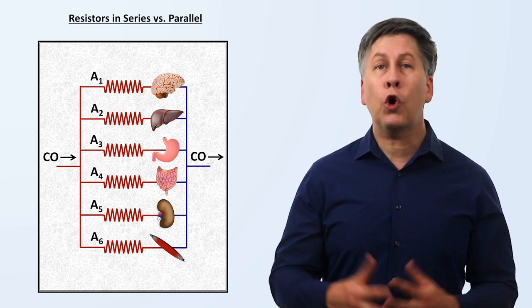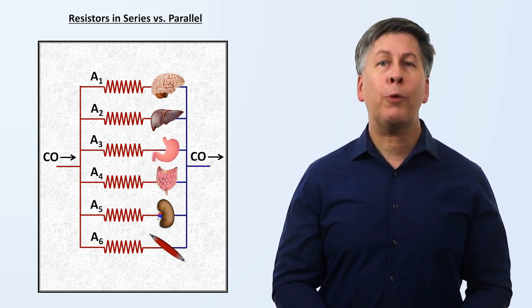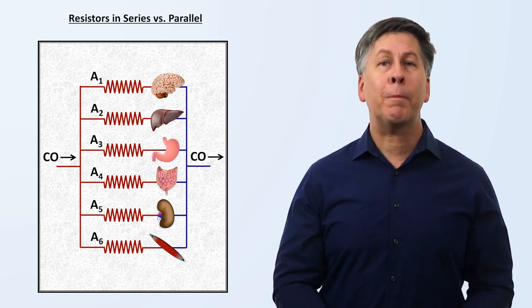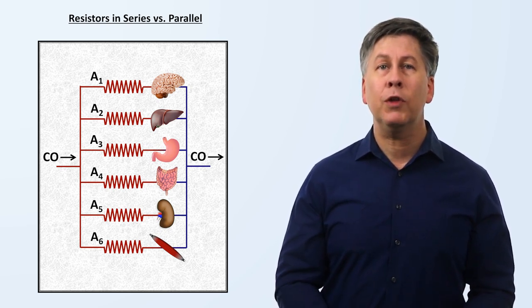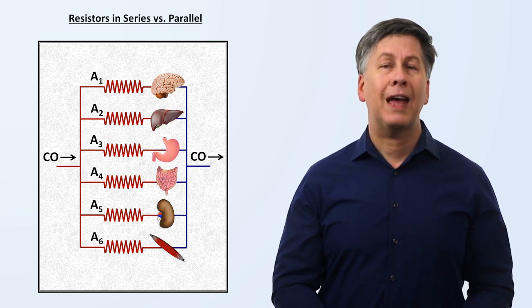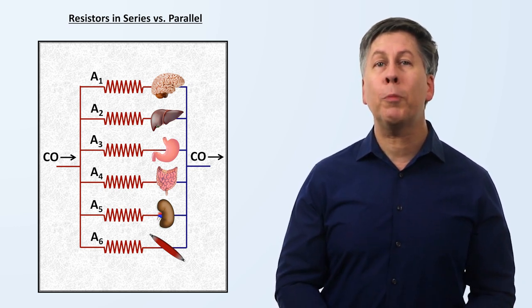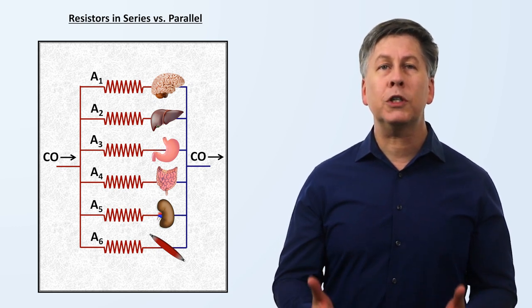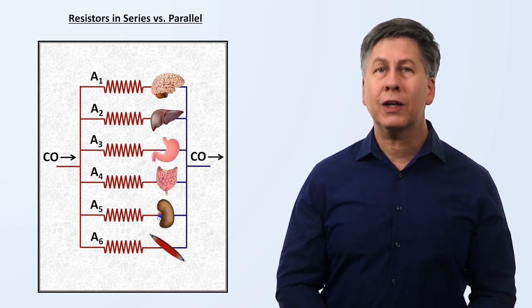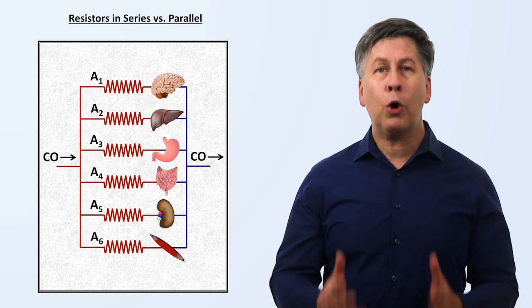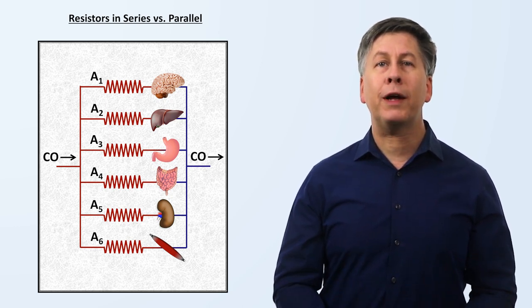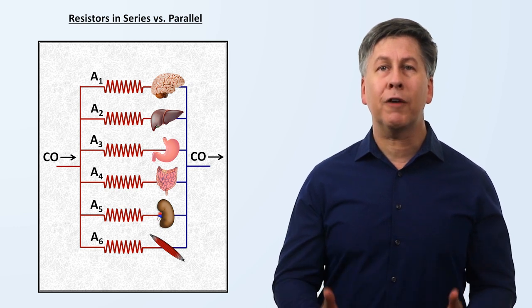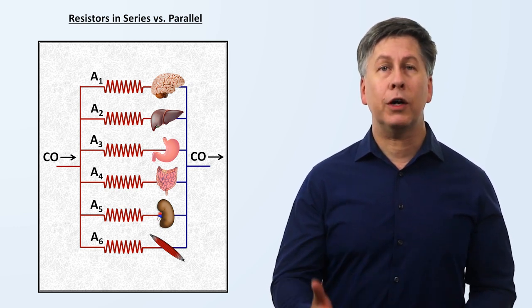One very notable exception to this are large pulmonary embolisms, which are blood clots that form in the systemic veins and then break off and travel via the venous system through the right side of the heart and become lodged somewhere in the pulmonary arterial tree. These clots can be large enough and numerous enough to reduce the total cross-sectional area of the pulmonary vasculature to the point that a clinically relevant increase occurs in the resistance to blood flow out of the right side of the heart.